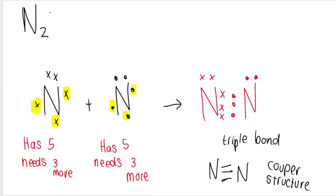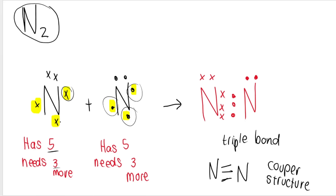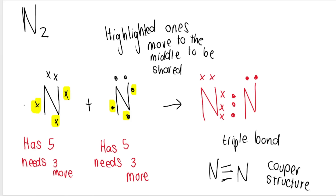For N2: nitrogen has five valence electrons and needs three more (five plus three equals eight). The second nitrogen also has five and needs three more. Each nitrogen shares its three unpaired electrons — the three shared pairs go to the middle, forming a triple bond. In the Kekulé structure this triple bond is represented with three lines. The remaining electrons on each nitrogen form one lone pair.